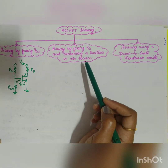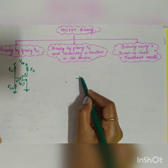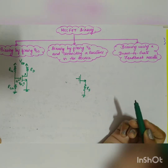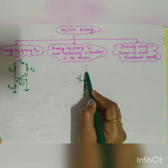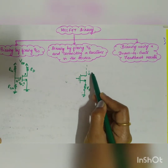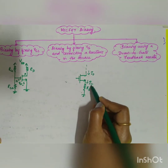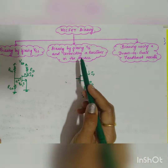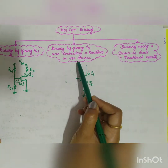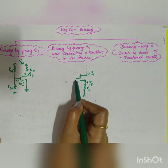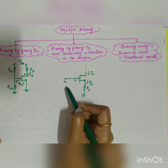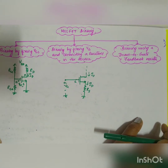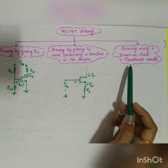For the second configuration — biasing by fixing VG and connecting a resistance in the source — the same diagram is modified by connecting a resistor RS across the source. The same drain current ID flows. Across the gate, a fixed voltage VG is applied, which is a standard value that does not change.